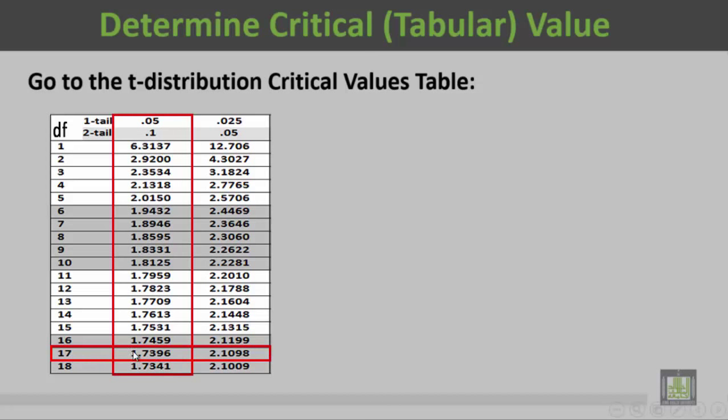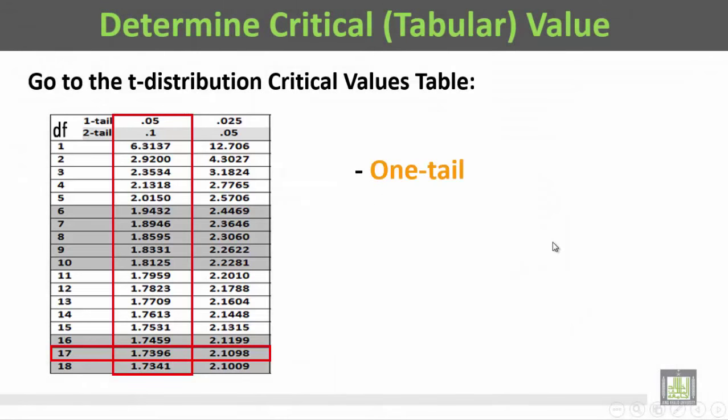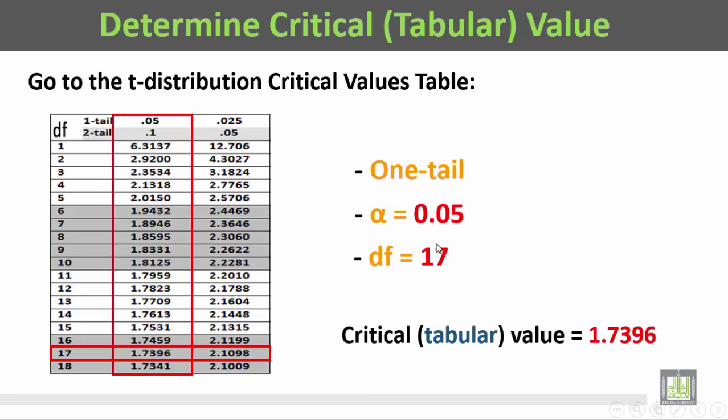This is a one-tail test with alpha equal to 0.05 and degrees of freedom equal to 17, so the critical or tabular value is equal to 1.7396.